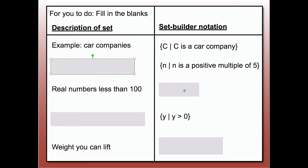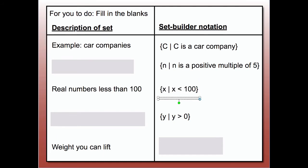Let's take a look at the set of real numbers less than 100. This is the set of all x — all real numbers x — such that x is less than 100. You could have used any variable; you didn't have to use x.